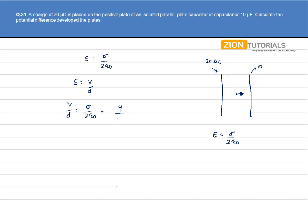This sigma can be written as Q by A to 2 epsilon not. Because this sigma is nothing but the charge density or the surface charge density of the plate.